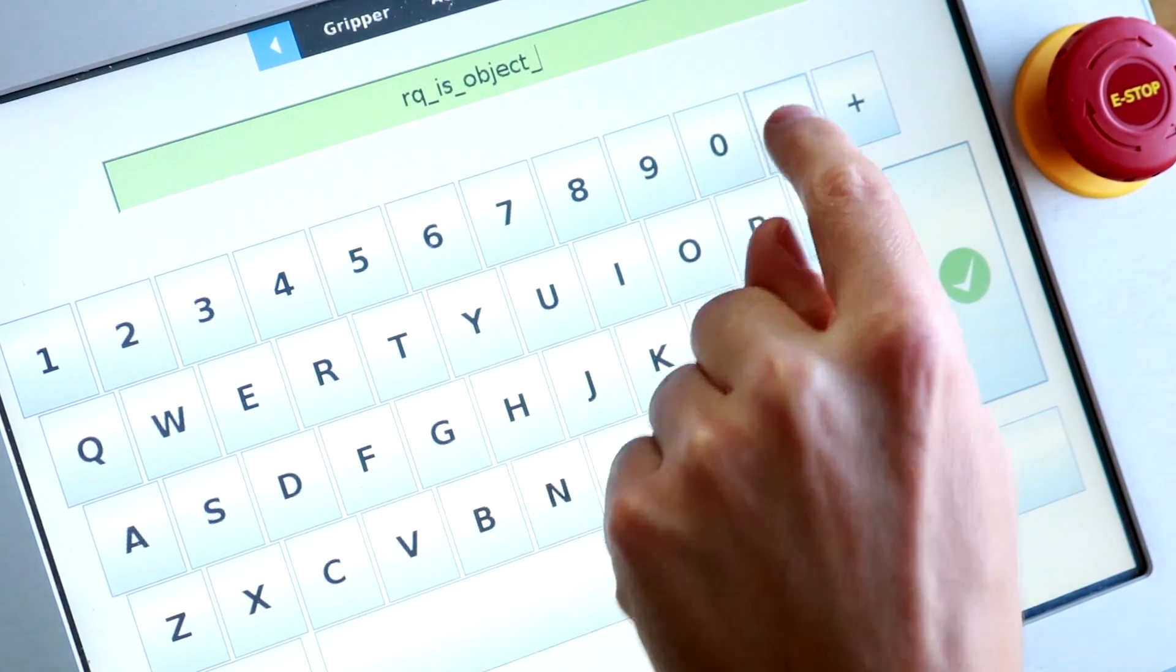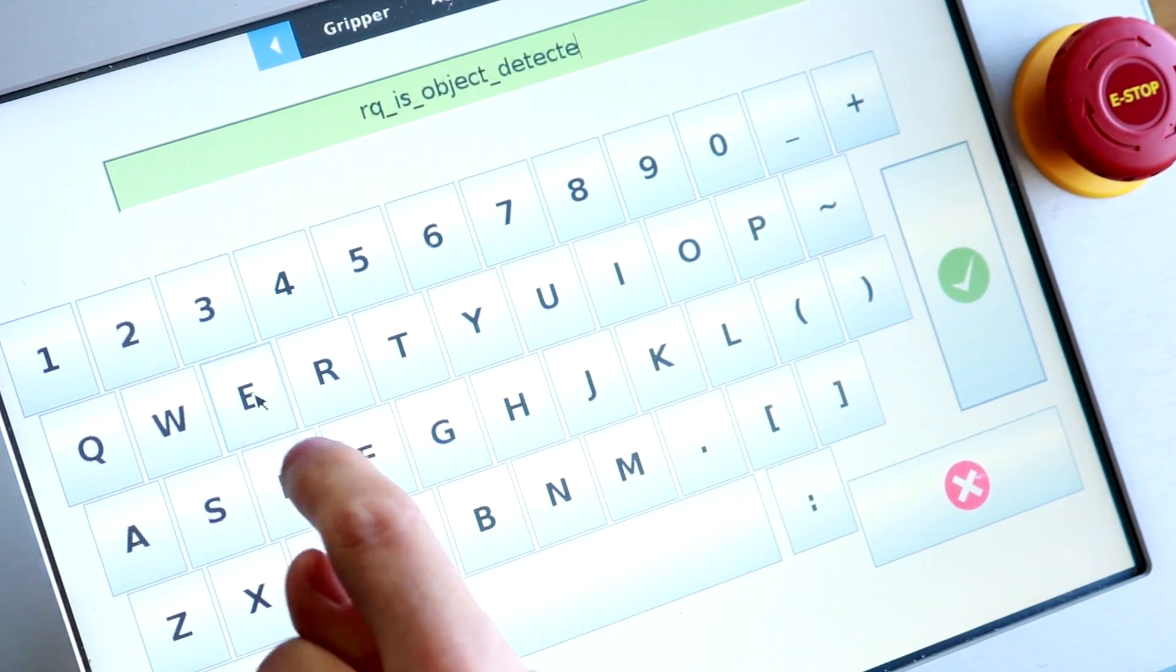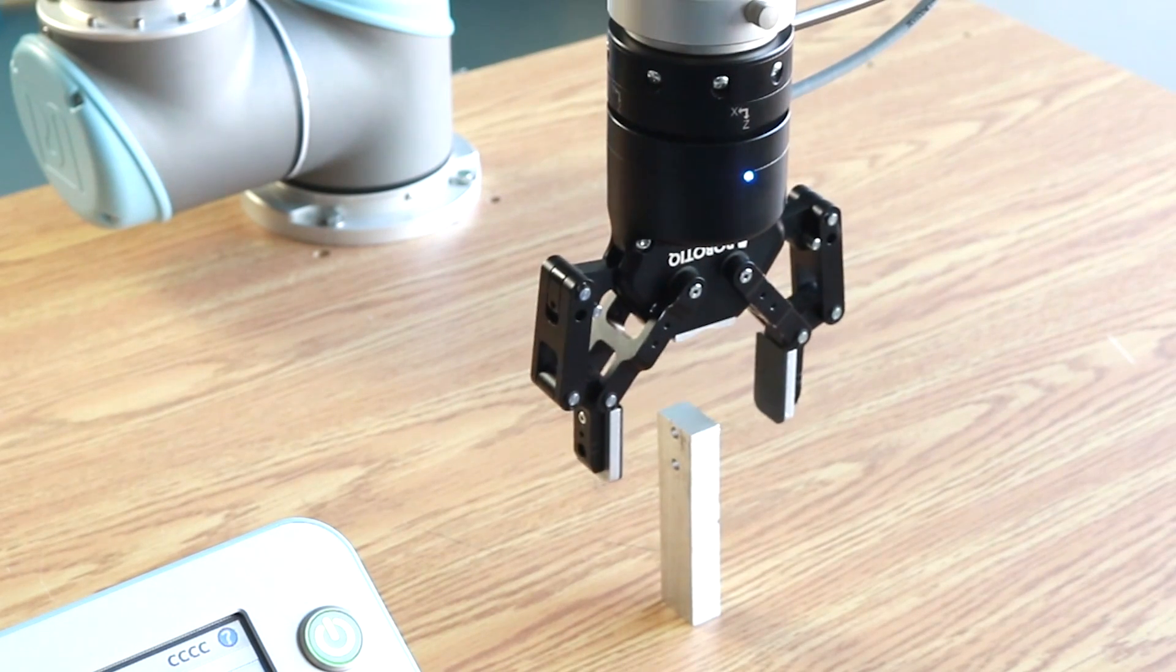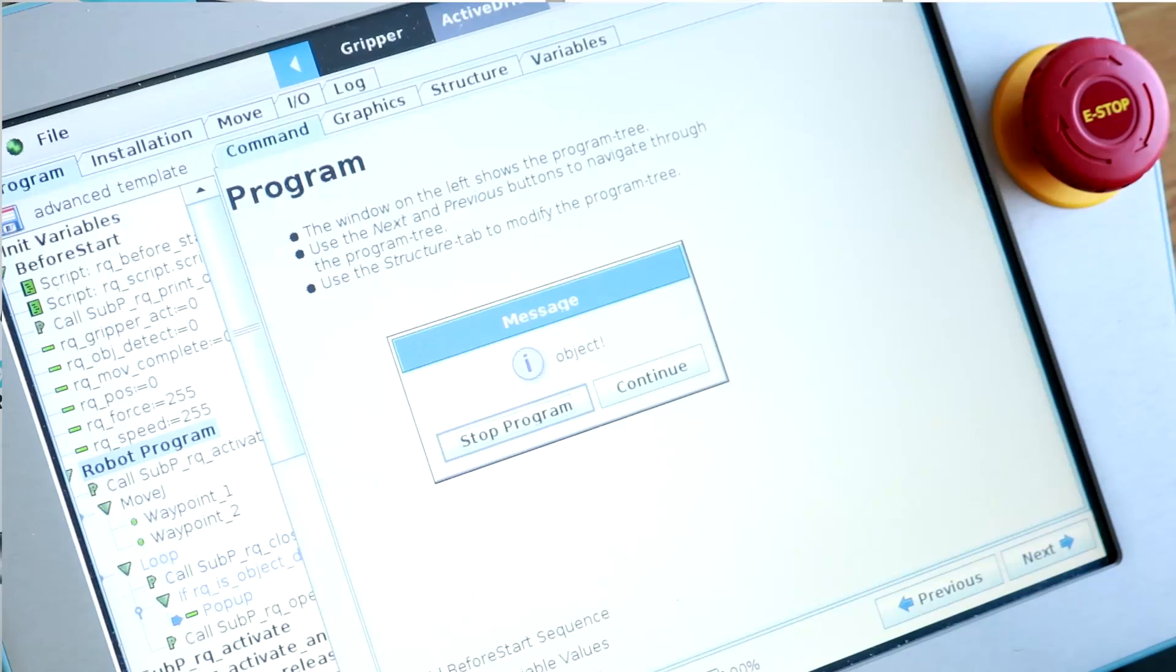That means that if an object is detected, the program will go on to the next instruction. In my example, I have a text pop-up.